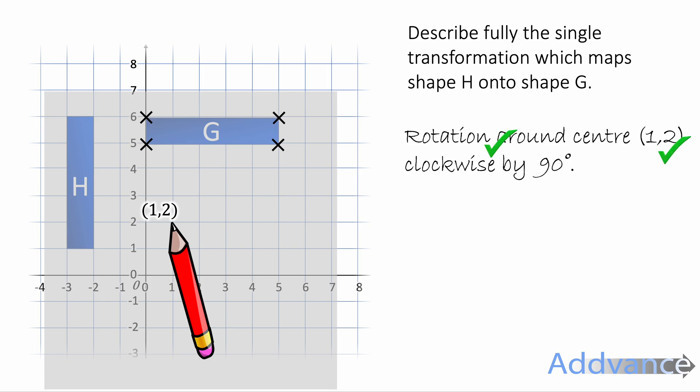We get one mark for saying rotation, one mark for giving the coordinate of the centre, and one mark by saying clockwise by 90 degrees. You do have to say clockwise or anticlockwise when you're doing this. Some rotations will be anticlockwise. So it's important to say that.